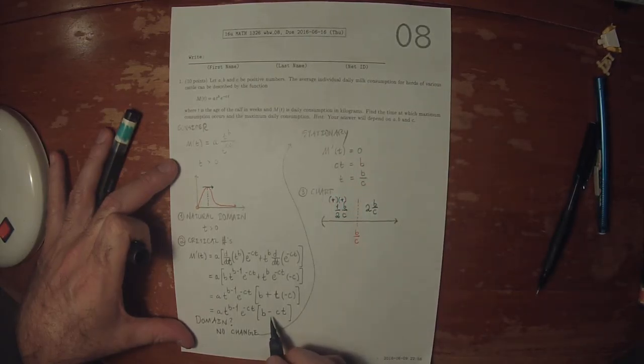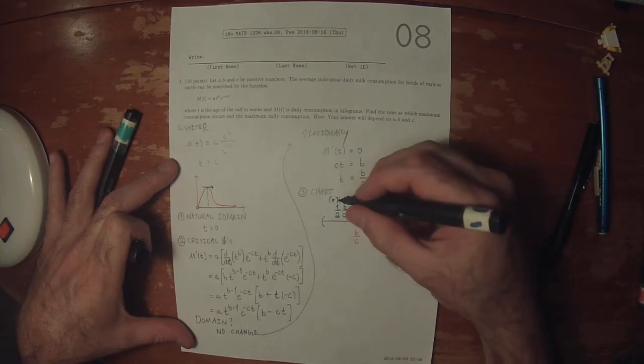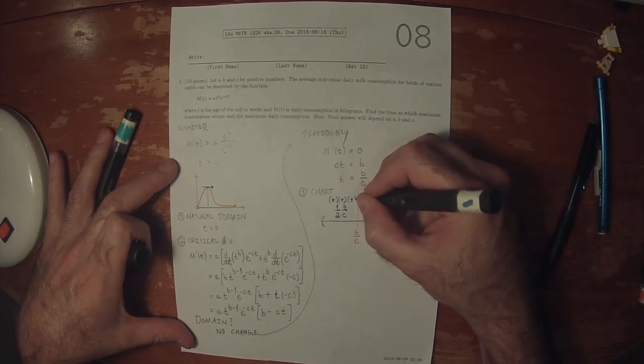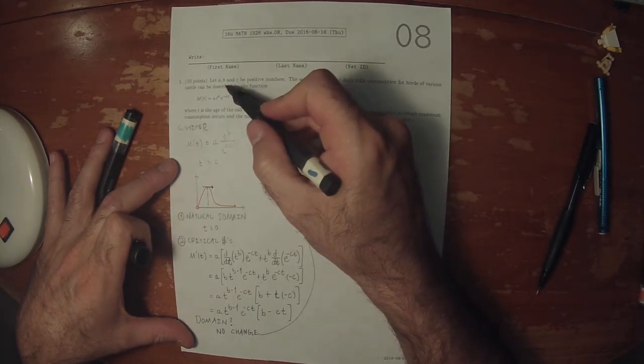And then if we plug in half B over C, this will be B minus half B, so this would be one half B. So it would be positive because B is a positive constant.